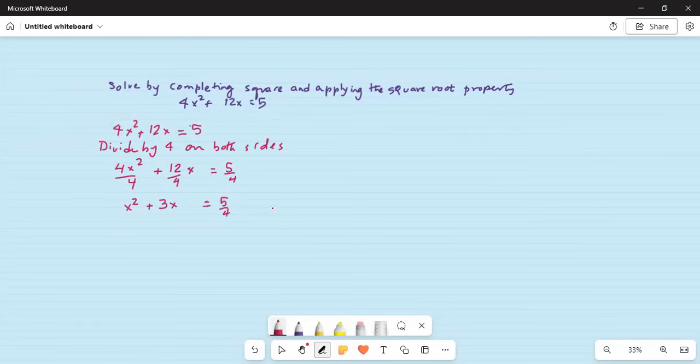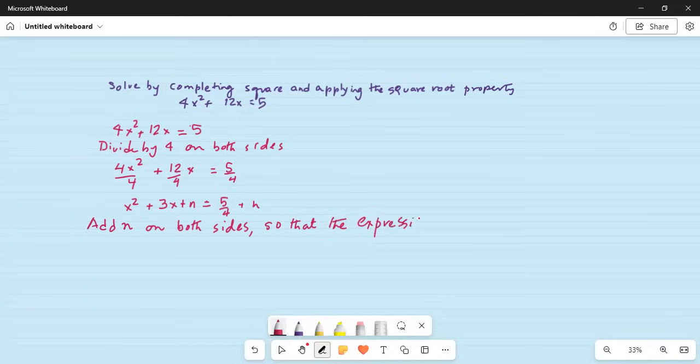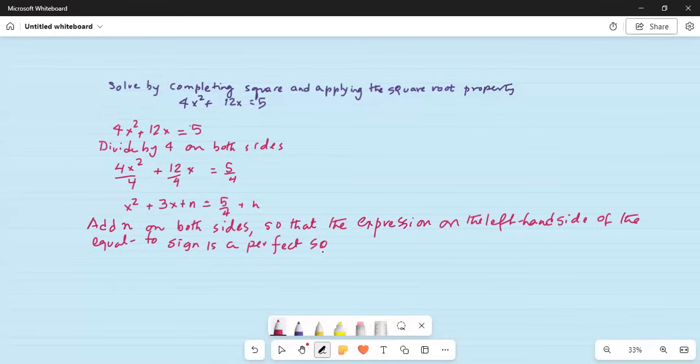Now we will work with the coefficient of x which is 3. So we will add a term here which will make the left hand side, add n on both sides, so that the expression on the left hand side of the equal to sign is a perfect square.